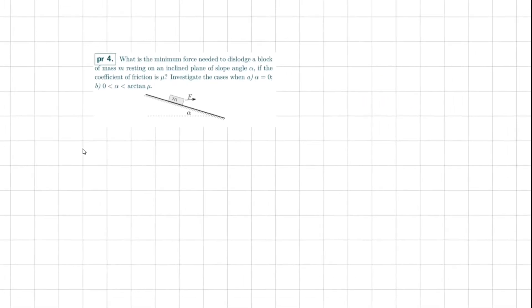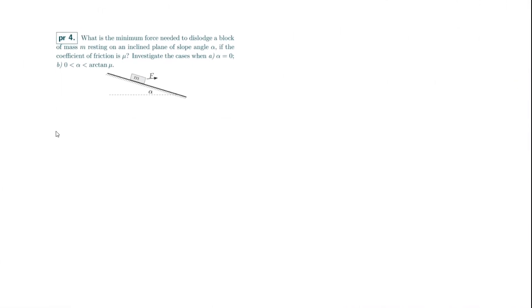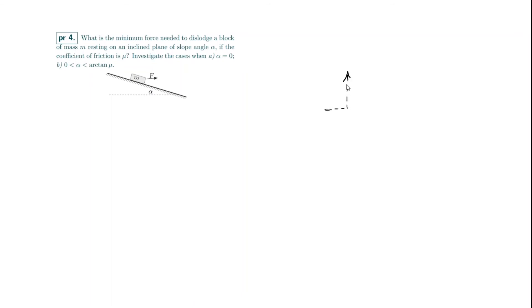Problem number four uses a key trick: just before slippage, the friction force and normal force combine into a resultant force at angle arctan(μ) from the normal direction. So instead of treating them separately, we can work with their vector sum, whose direction is fixed at arctan(μ) to the normal.